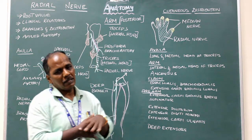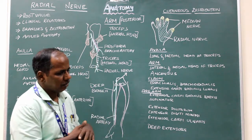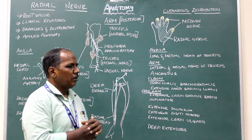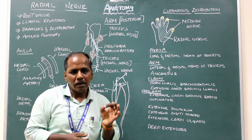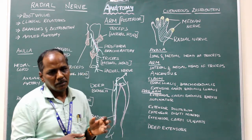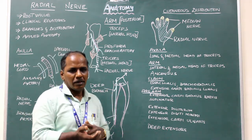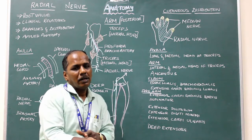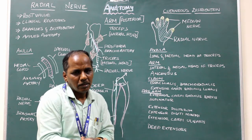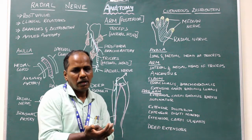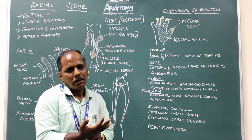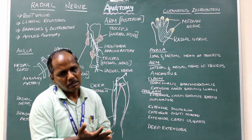Articular branches: It gives articular branches to the elbow joint, wrist joint, and carpal joints.